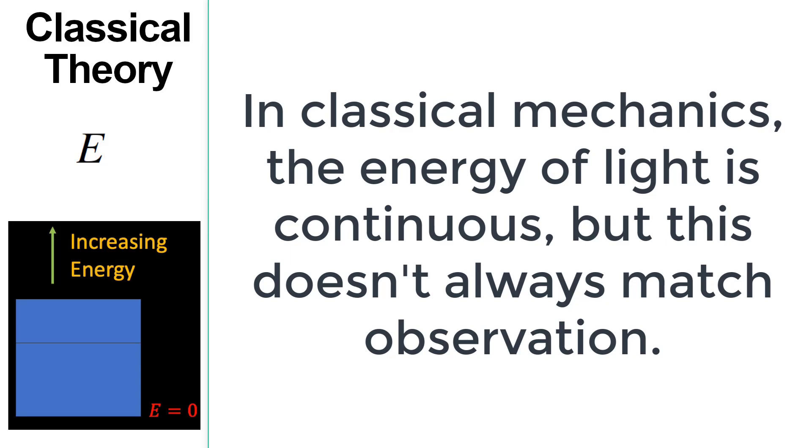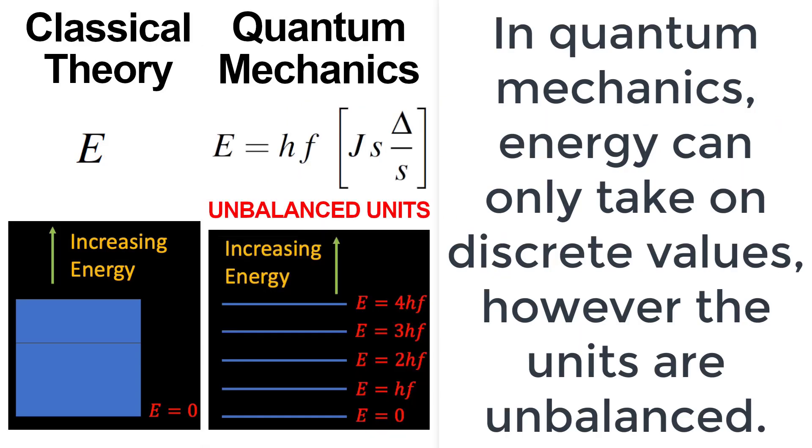In classical mechanics, the energy of light is continuous, but this doesn't always match observation. In quantum mechanics, energy can only take on discrete values.